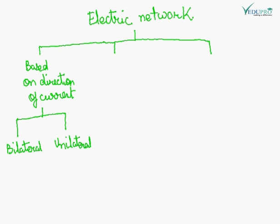Based on direction of current, the electric network is of two types: bilateral and unilateral. In bilateral, current in any direction flow, its property will remain the same. Whereas in unilateral, the property changes when the current is reversed. Bilateral devices are RLC, whereas unilateral are like diode.